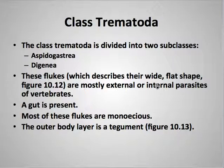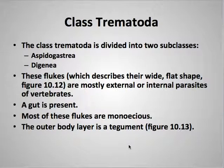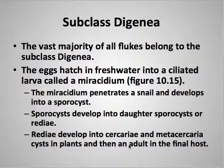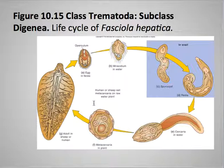The trematodes are divided into two subclasses. These flukes are usually mostly external or sometimes internal parasites of vertebrates. There is a gut, they are mostly monoecious, and they have an outer layer called a tegument which helps protect them within and outside of their host. Most of them belong within the subclass Digenea — the eggs hatch in fresh water into a ciliated larva called a miracidium. This penetrates into a snail — very specifically into a snail — and develops into a sporocyst, as you can see in the development shown here.